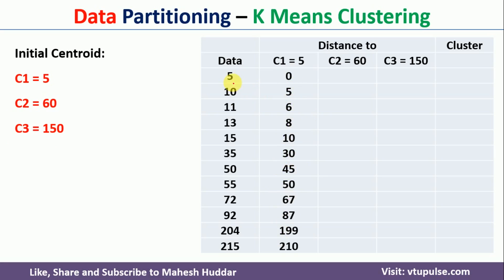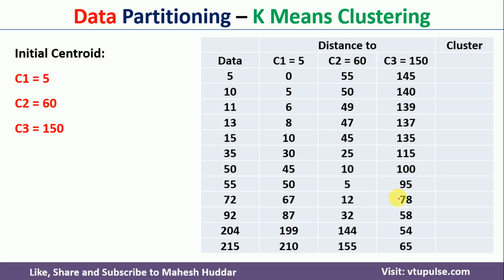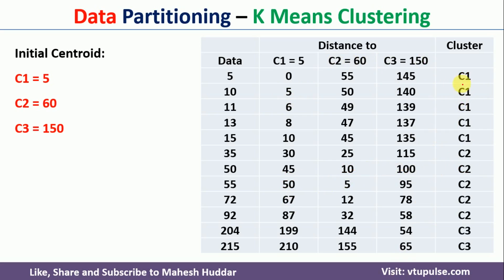Similarly, we calculate the distance from each data point to the second and third centroids. Looking at each row, we assign the data point to the centroid with the smallest distance. For example, 0 is the smallest in the first row so it is assigned to c1; in another row, 10 is the smallest so it is assigned to centroid 2. Once all assignments are done, we recalculate new centroids — the new c1 is 10.8, which is the average of the data points in that cluster.